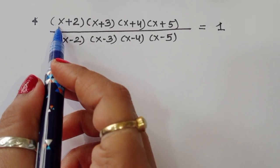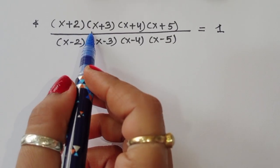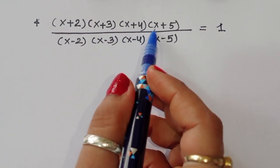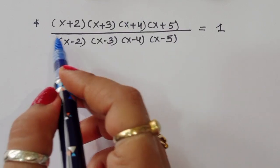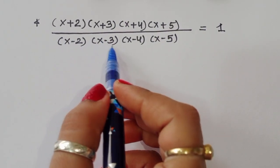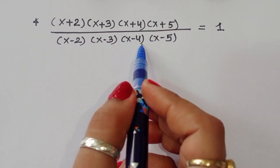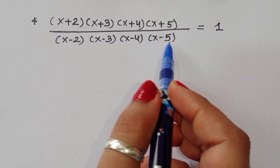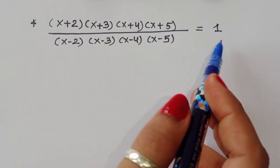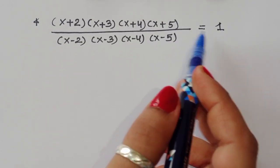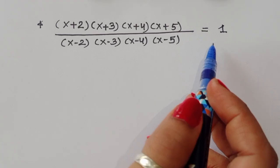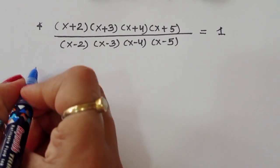The question is: (x+2)(x+3)(x+4)(x+5) divided by (x-2)(x-3)(x-4)(x-5) is equal to 1. We have to find out the value of x. Let's see the solution.